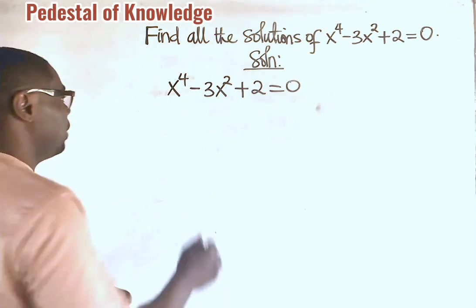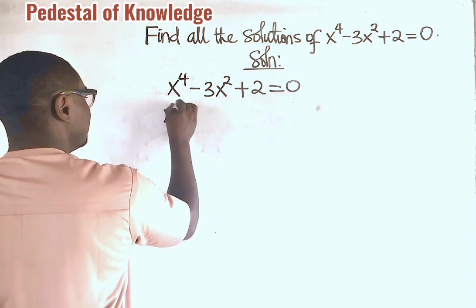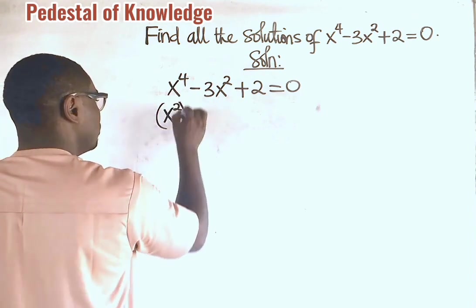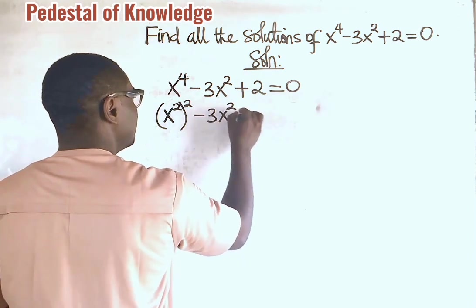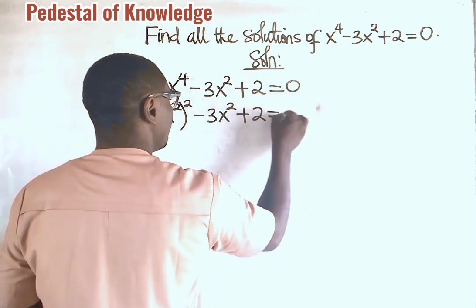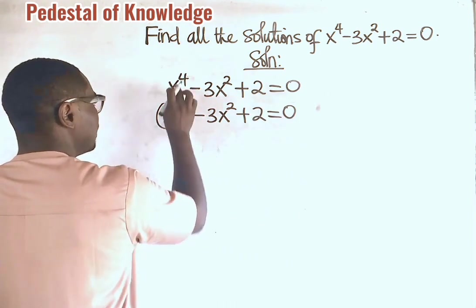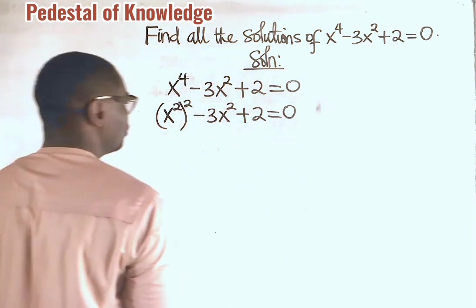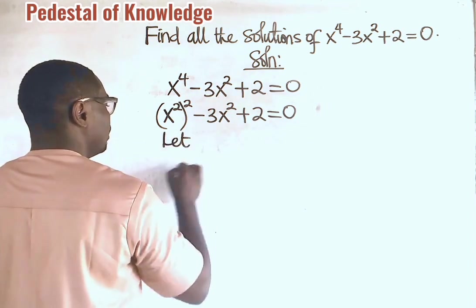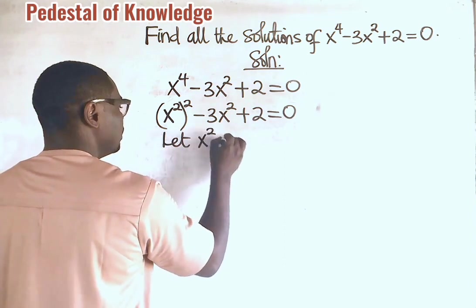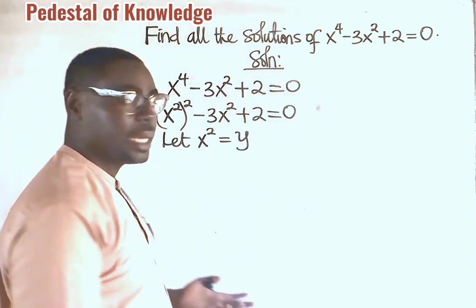Remember that here, x raised to the power of 4 can be written as x squared all squared minus 3x squared then plus 2 is equal to 0. Because x squared all squared is the same thing as x raised to the power of 4. So, from here now, we can now let x squared to be y, where y is an arbitrary parameter there.